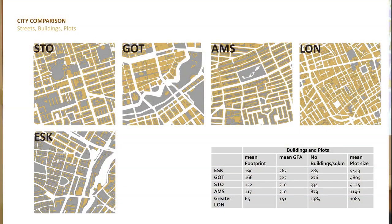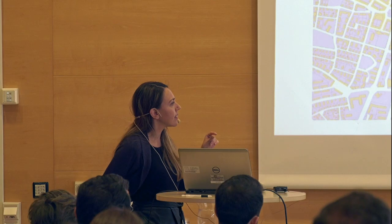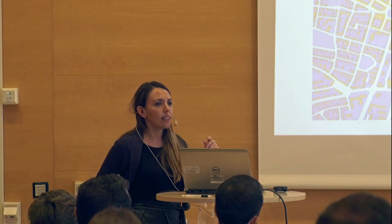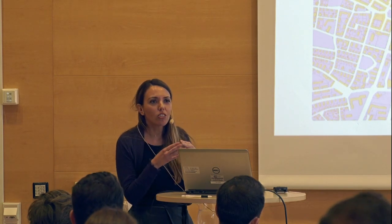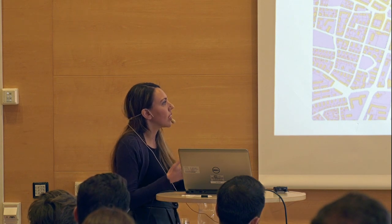Going into buildings and plots and looking at simple calculations, we see interesting differences. Consistently the Swedish cities match each other and are quite different from the other two. The main building footprint and gross floor area show that London has a finer grain of buildings — smaller buildings with smaller footprints — and that goes with smaller plots as well compared to the Swedish cities, which have overall larger plots and larger buildings. That is related to the fact that London had a higher network density, since the street network, the plots, the grain of the buildings — all these are interrelated.